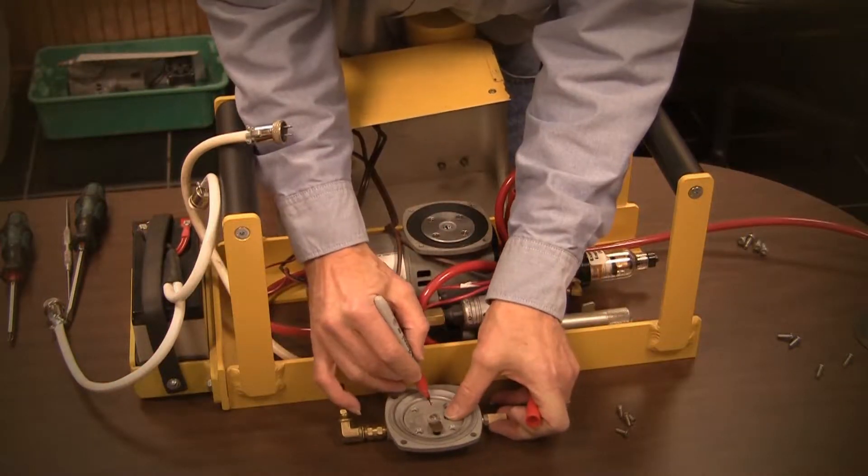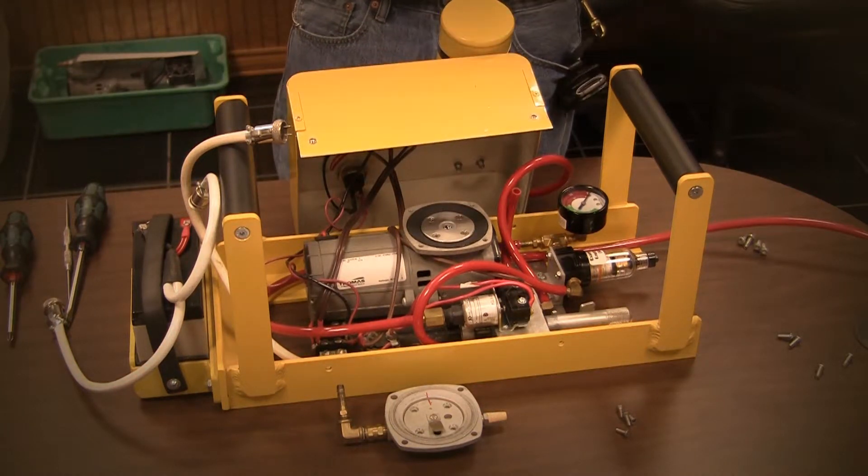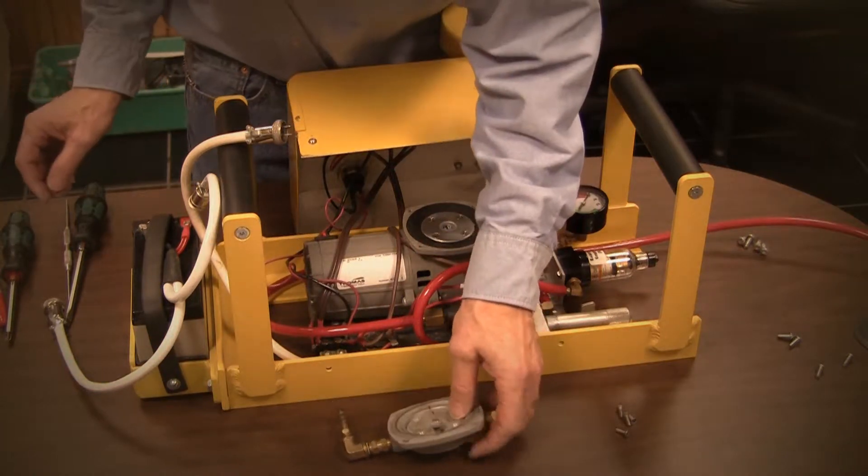Before you remove the valve plate, mark its orientation in the pump head for correct reassembly. Remove the valve plate and discard the head gasket.